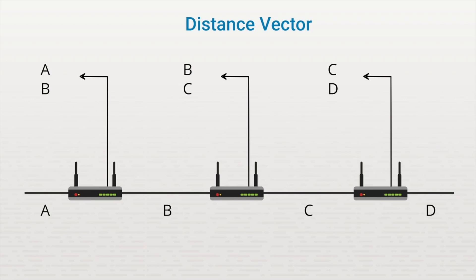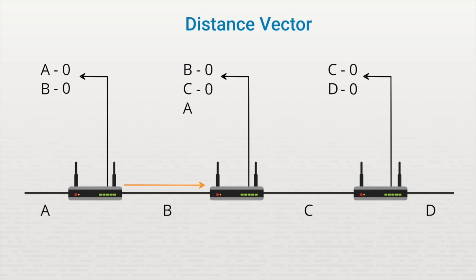Routing information is shared by routers periodically. First, this router would share the routes it knows about — networks A and B — with its neighbor. The second router receives this information and looks at its own routing table. It sees that it already knows about network B, but it doesn't know anything about A, so it would add A to its routing table. This routing protocol uses the hop count metric. Directly connected networks are identified with a metric of zero, meaning no routers have to be traversed to reach the destination network. When the first router shares its information, the receiving router, in adding the new network to its table, would know that the route is not directly connected. So it would take the shared information and increment the hop count by one, knowing that in order to reach destination network A, it must go through one additional router.